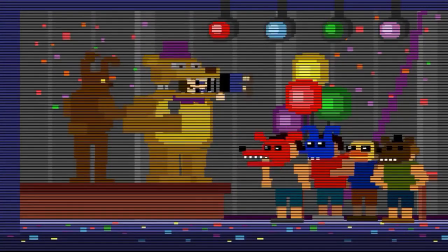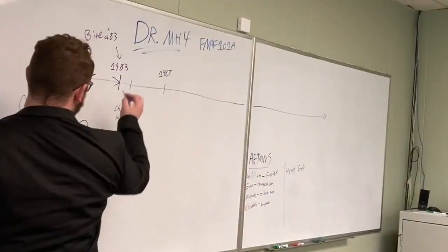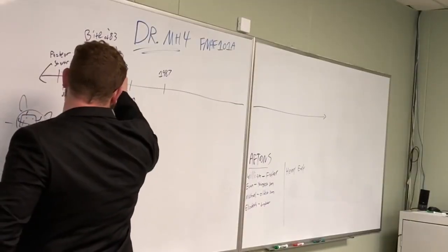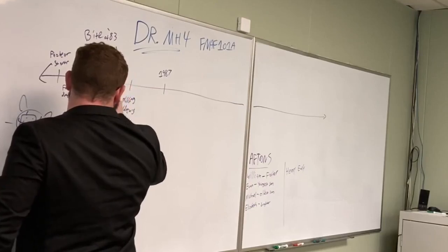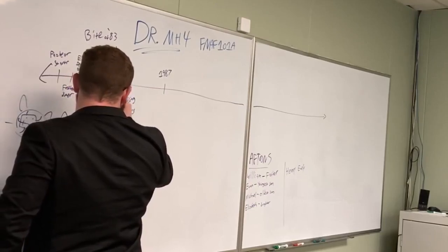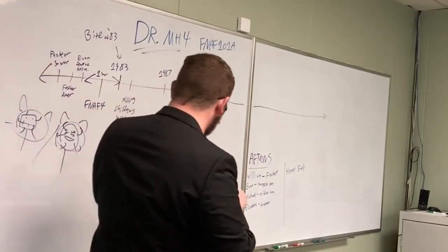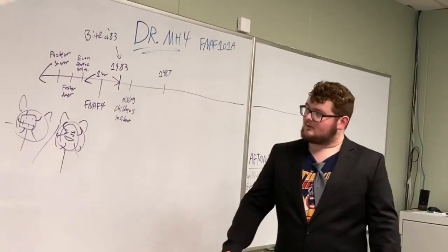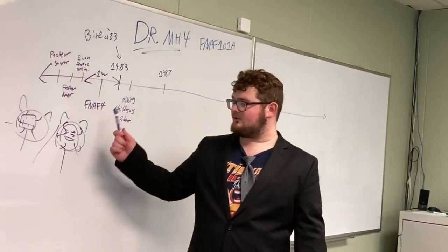Between the Bite of 83 and Evan developing the fear of animatronics, there is a one-week period where FNAF 4 takes place. FNAF 4 involves you with the Nightmare animatronics. It is heavily theorized that throughout the course of FNAF 4, you are playing through Evan Afton's nightmares of the Fredbear animatronics.